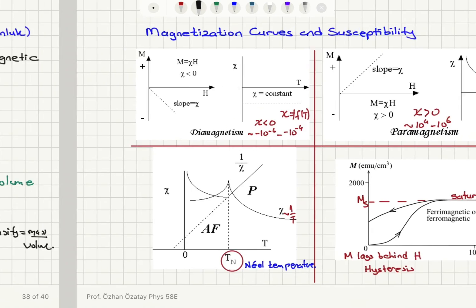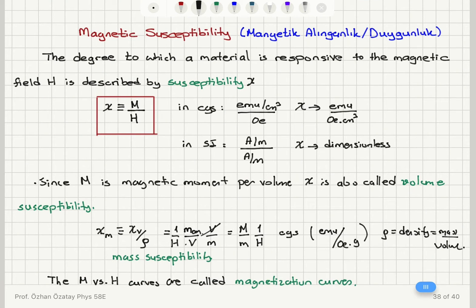We have introduced the concept of magnetic susceptibility, which describes how a material responds to an applied magnetic field. The ratio of the resulting magnetization to the applied magnetic field is called susceptibility. In CGS it's EMU per Oersted centimeter cubed; in SI it's dimensionless because M and H have the same unit, ampere per meter.